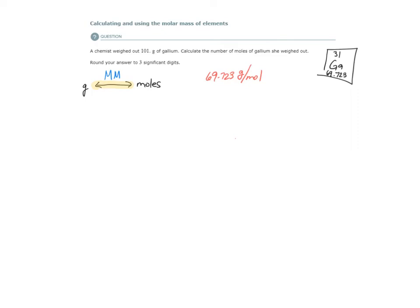So to do the conversion, let's start out with 101 grams of gallium. I'm going to input my one and only conversion factor that I need,